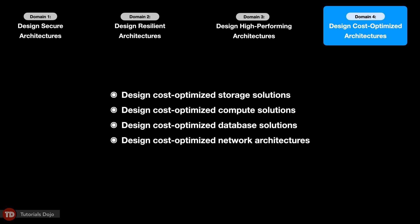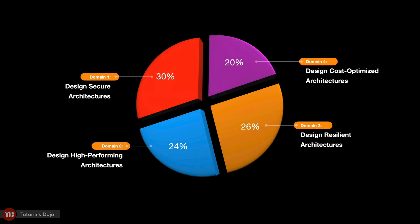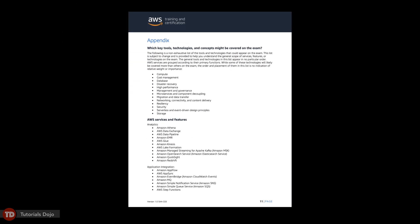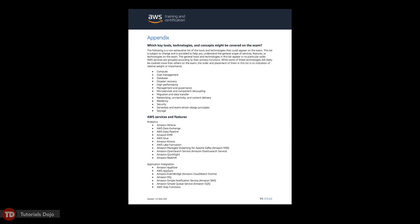These are the four exam domains that you should be familiar with when you start your exam preparations. The SAA exam is primarily focused on security, so make sure that you focus on the Design Secure Architectures domain and all the related knowledge areas in its task statements. I highly recommend that you read the official exam guide for the AWS Certified Solutions Architect Associate exam from cover to cover. Pay close attention to the topics included, and don't forget to read the appendix section, which contains a list of related AWS services that will appear in the exam.